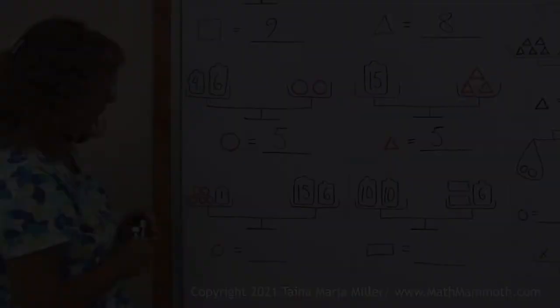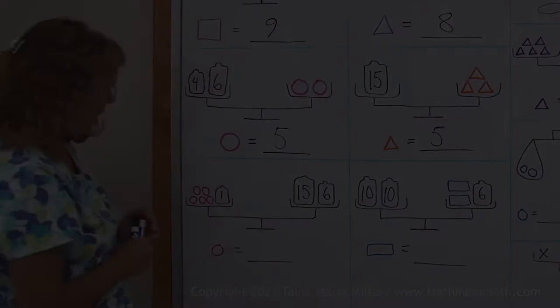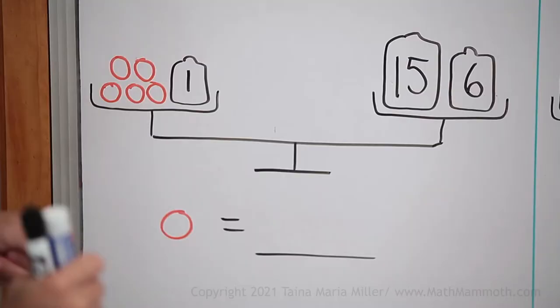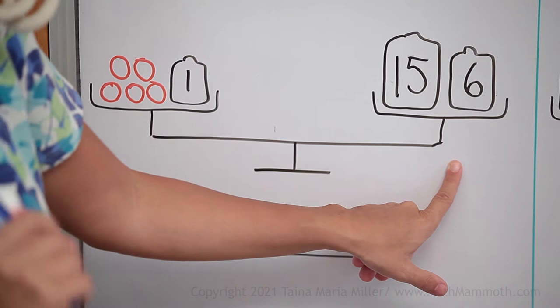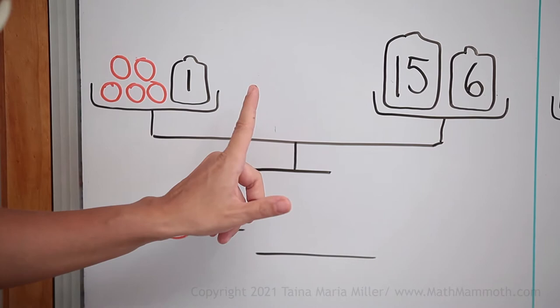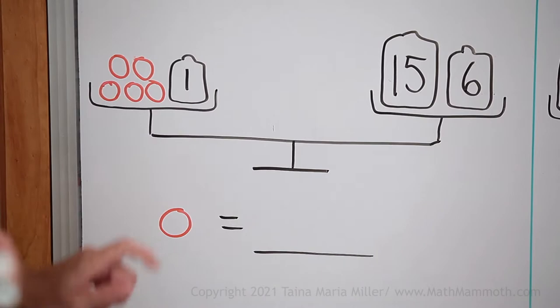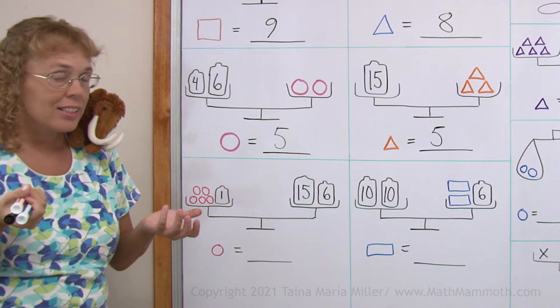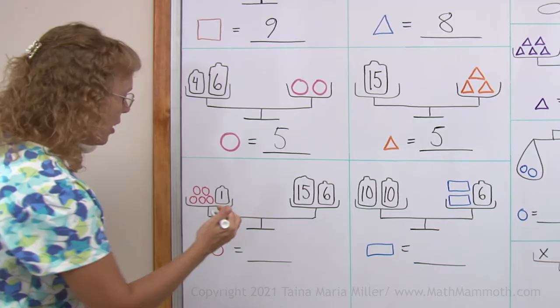Over here, we have a little bit more complicated situation. Now this side is easy, it's a total of 21. So this here must also weigh 21. Now think this way, all these circles together must weigh 20, because this weight here is 1. So if 5 circles weigh 20, then 1 circle weighs 4. You have to use your multiplication and division skills.